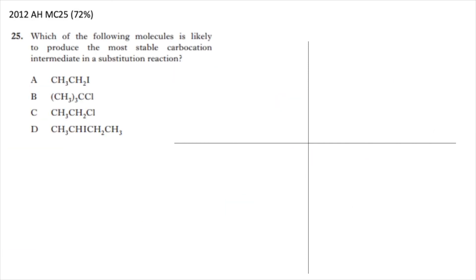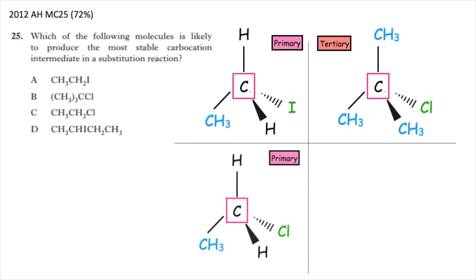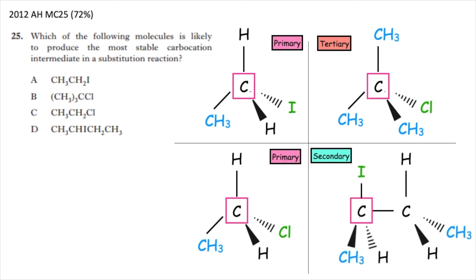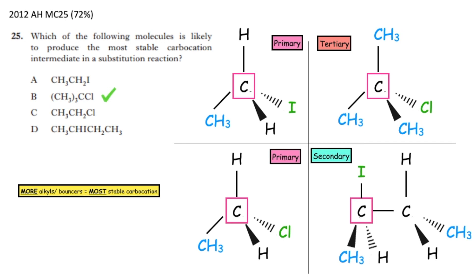This past paper question is from the Advanced Higher 2012 multiple choice question 25: which of the following molecules is likely to produce the most stable carbocation intermediate in a substitution reaction? The first thing we want to do is draw each of these structures out into the full structural formula, identify the central carbon atom which contains the halogen, and remember — the more R groups, more alkyl groups, more carbon groups, more bouncers surrounding that carbon, the more stable it's going to be. The correct answer is multiple choice answer B.